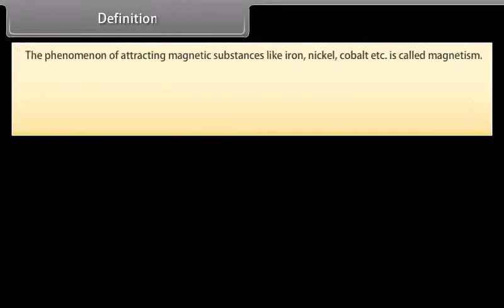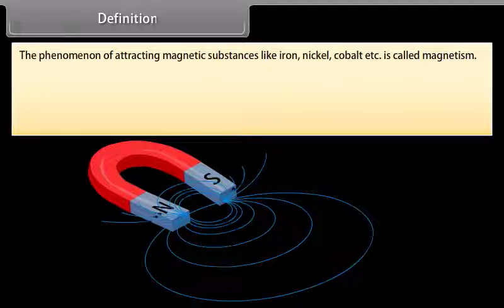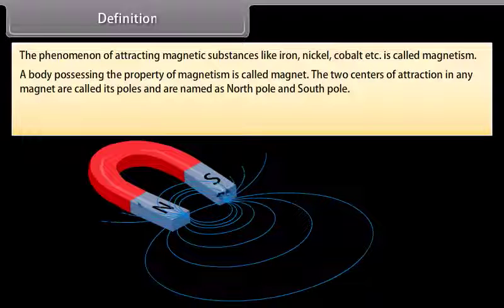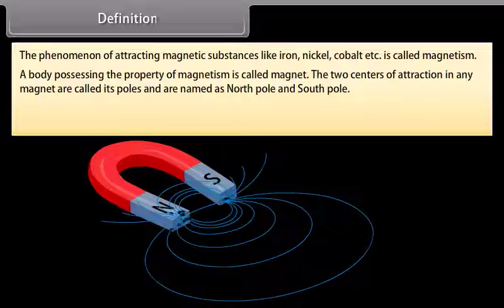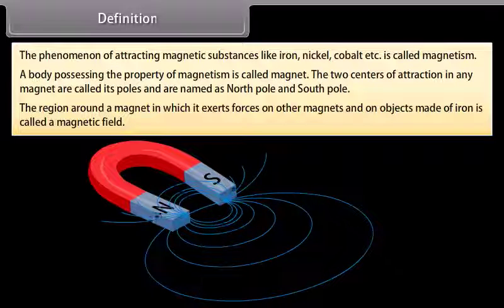The phenomenon of attracting magnetic substances like iron, nickel, cobalt, etc. is called magnetism. A body possessing the property of magnetism is called a magnet. The two centers of attraction in any magnet are called its poles and are named as north pole and south pole. The region around a magnet in which it exerts forces on other magnets and on objects made of iron is called a magnetic field.